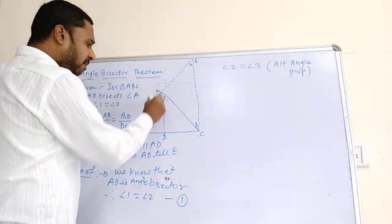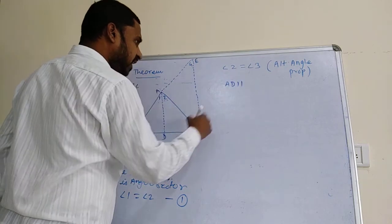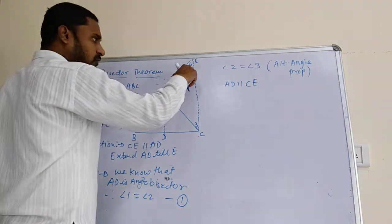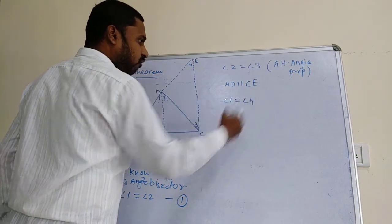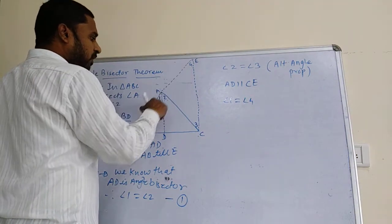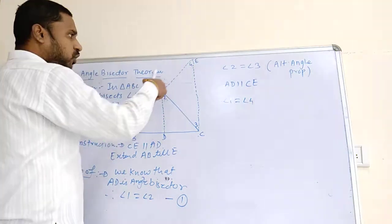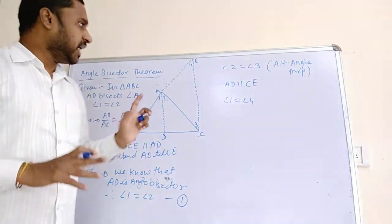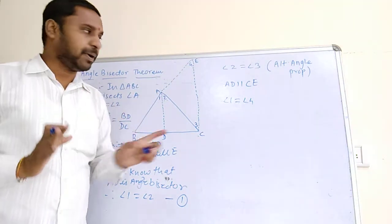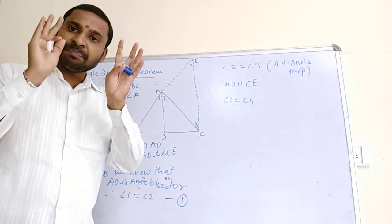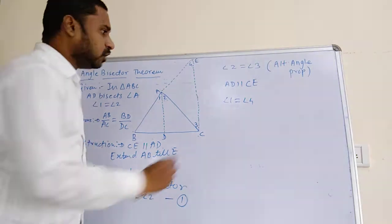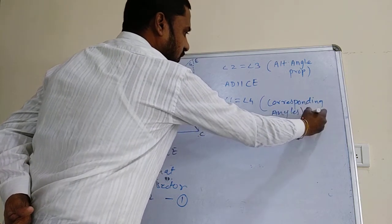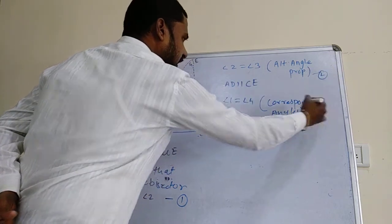Next, since AD is parallel to CE, therefore Angle 1 is equal to Angle 4. The reason is that AE acts as a transversal, and Angle 1 and Angle 4 form an F-formation — they are corresponding angles. When lines are parallel, corresponding angles are equal. Write this as Equation Number 3.